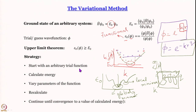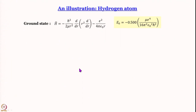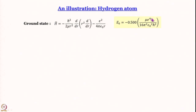Let us demonstrate this by going back to the hydrogen atom. We do not have to do this variational treatment for the hydrogen atom because we already know the solutions. But since we know the solutions, the hydrogen atom provides a very good test system because we know the expression for energy and we know the Hamiltonian. Since its ground state has no theta-phi dependence, I am only bothered with the r part of the Hamiltonian. I also know the ground state energy.